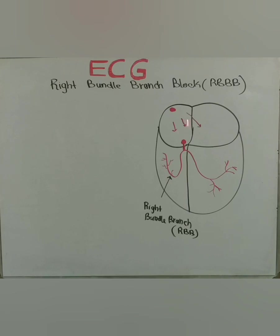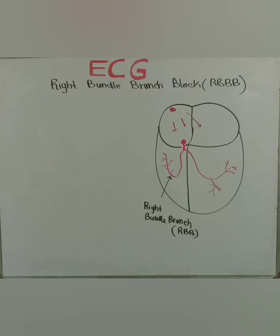To revise the conduction system: everything starts from the sinoatrial node, then it goes through the intra-atrial tracts including the Bachmann's tract, and depolarizes the atria. From there, the impulse enters into the AV node which delays it for a short time, and then it enters into the bundle of His. From here it goes towards three sides — one very small branch goes towards the septum, and the septum is depolarized before the two ventricles are depolarized.